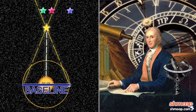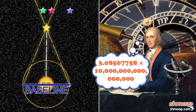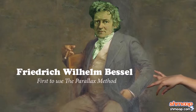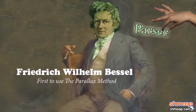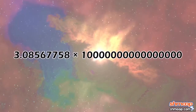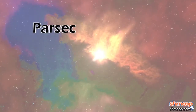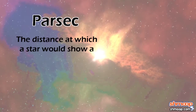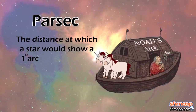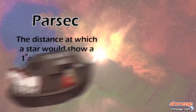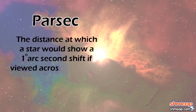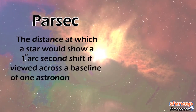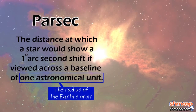But using tried-and-true measuring methods, the numbers would get a tad unwieldy. So they pulled the idea of a parsec out of their brains. In short, a parsec is the distance at which a star would show a one-degree arc second shift if viewed across a baseline of one astronomical unit — i.e., the radius of the Earth's orbit.